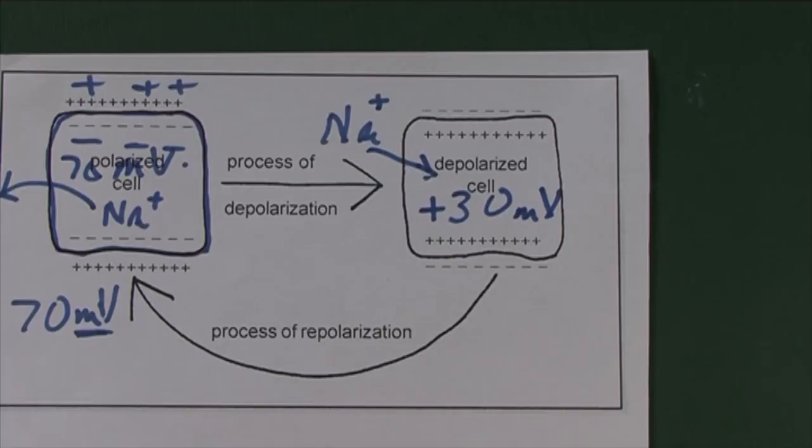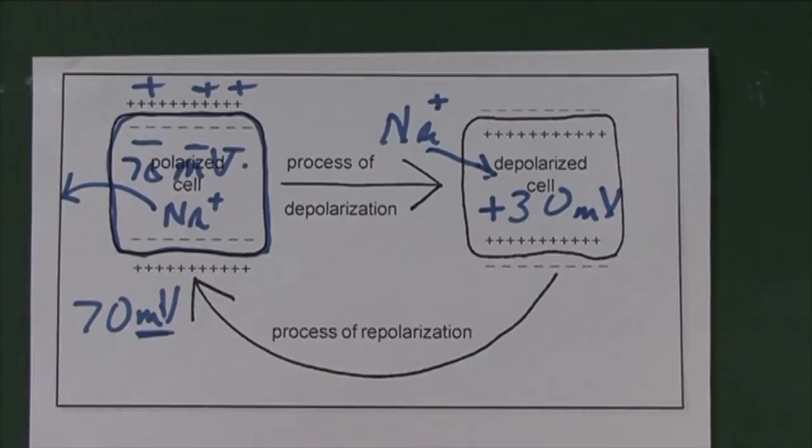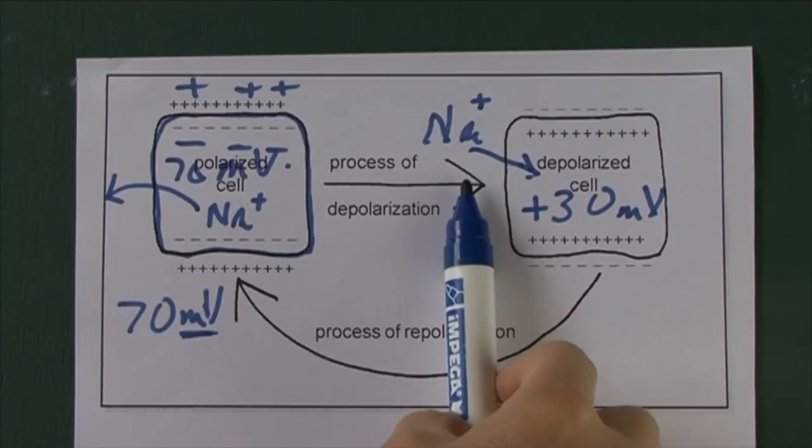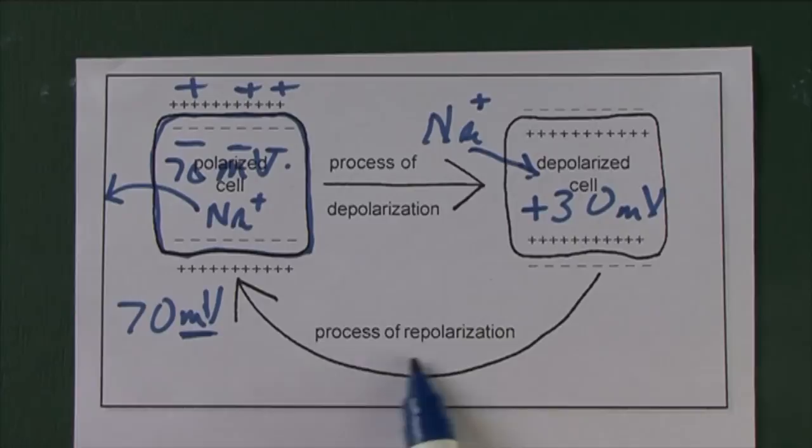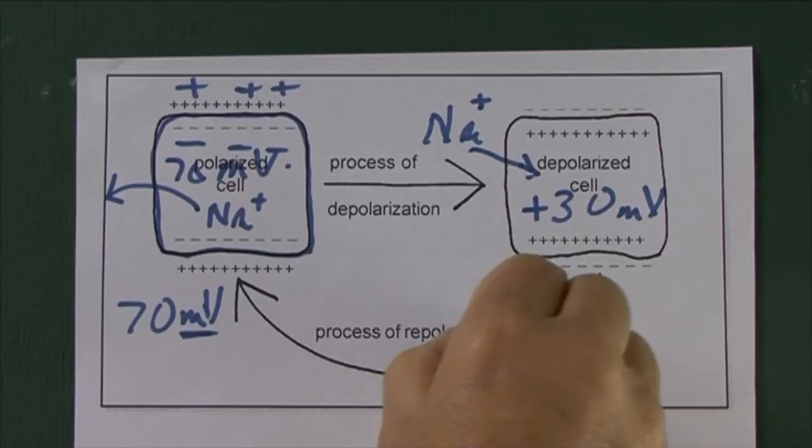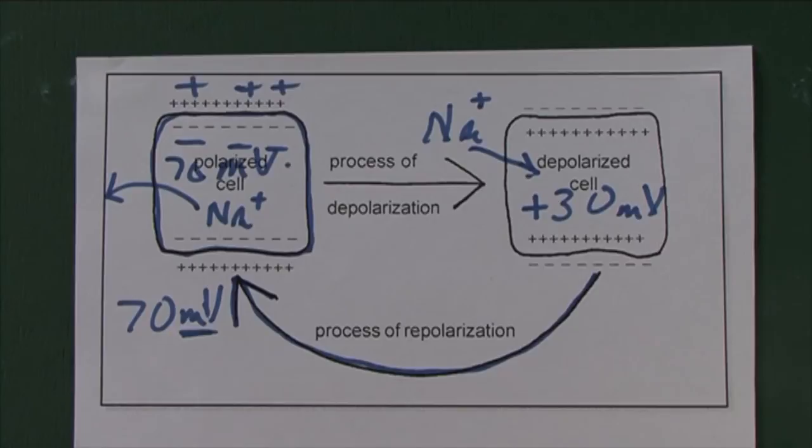If a nerve impulse is a process of depolarization, it follows that once a nerve impulse has passed, the depolarised cell must repolarise first before it can carry the next impulse. So when a nerve impulse has passed, the depolarised component will repolarise, so it's ready for the next nerve impulse. We can see this on the lower diagram.